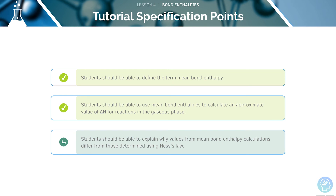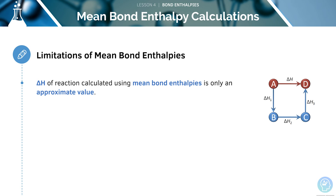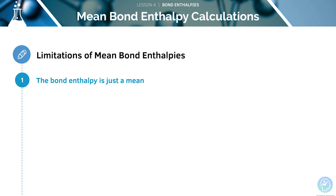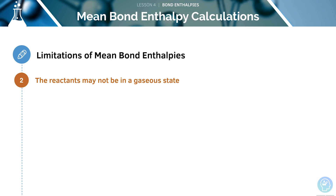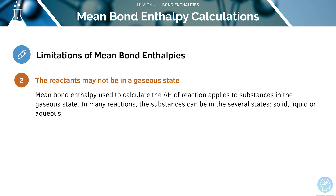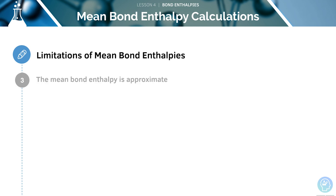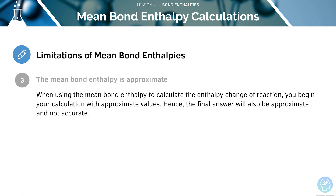Let's look at some limitations of using mean bond enthalpies. First, the delta H calculated using mean bond enthalpies is only an approximate value — it differs from the value obtained using Hess's law, because the specific bond being broken may have a different bond enthalpy to the mean used. Second, the reactants may not be in the gaseous state, and mean bond enthalpies only apply when reactants are in the gaseous state. Finally, the mean bond enthalpy itself is an average value, not an exact one, meaning your final answer will also be approximate.